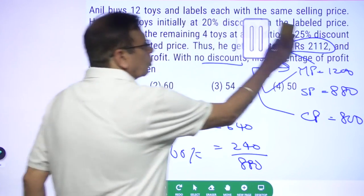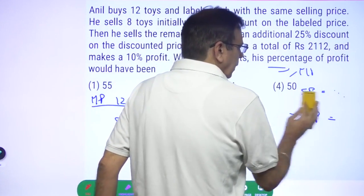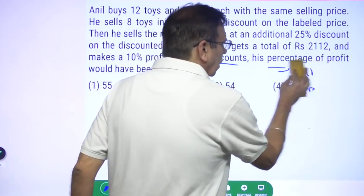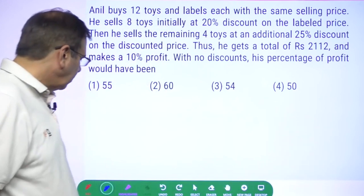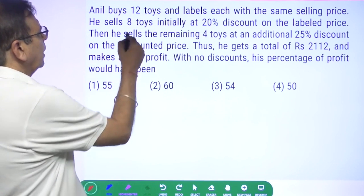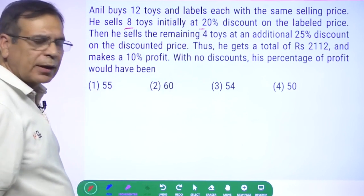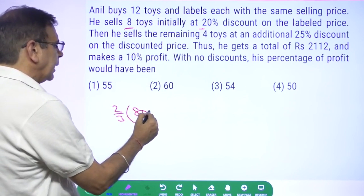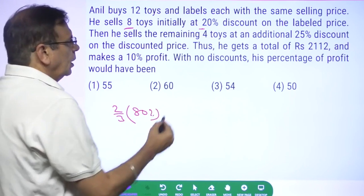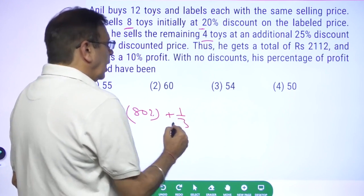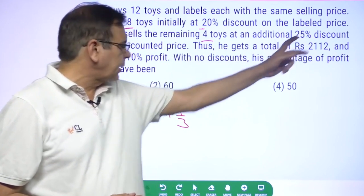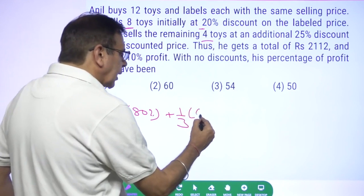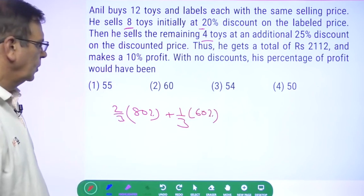Let me give you a slightly faster method of doing this question also. Whether you will be able to save time or not will be a function of whether you are able to calculate the way I do or not. 8 toys are sold at 20% discount. Can I say out of 12 toys, that means two-thirds of the toys are sold at 80% of the mark price. And the remaining four toys are sold at an additional 25% discount. 25% of 80 will be 60, sorry 20, so 60. So one-third are sold at 60% of the mark price.